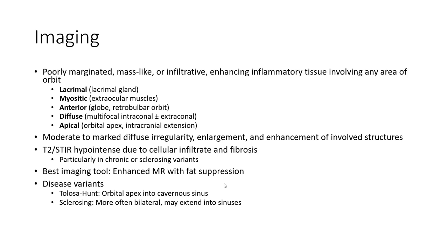Mass imaging best evaluated with MRI with fat suppression. Disease variants include Tolosa-Hunt, which extends into the cavernous sinus. Sclerosing type is more often bilateral and may extend into the sinuses.